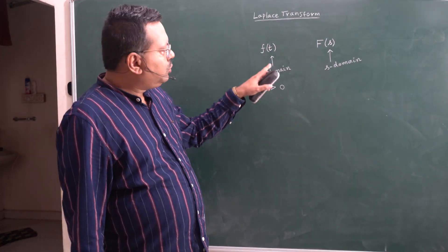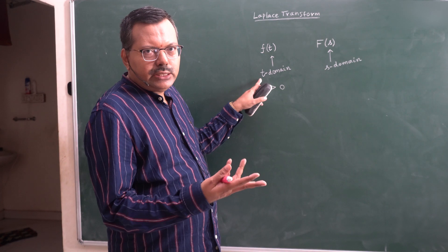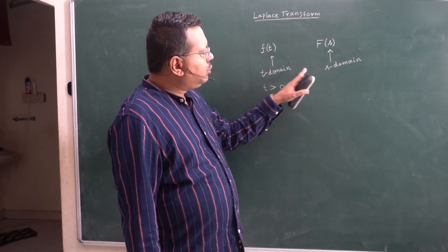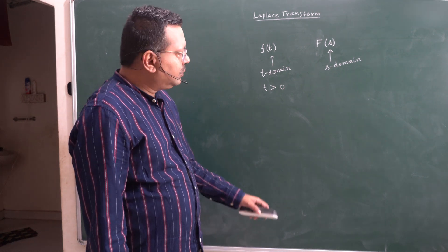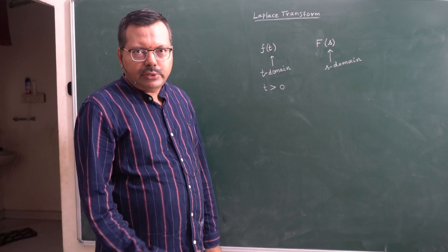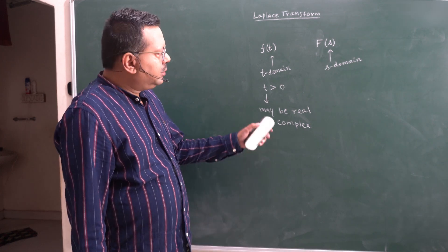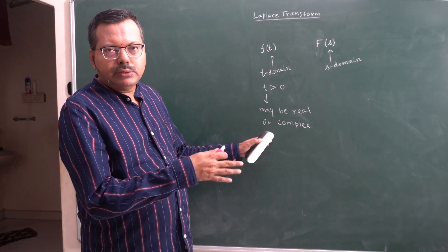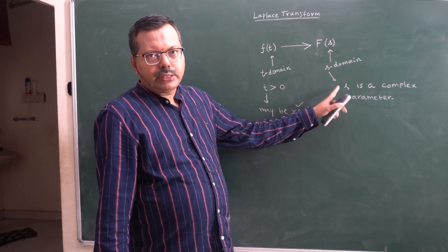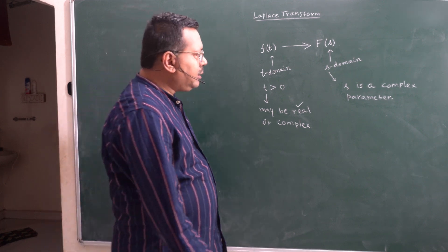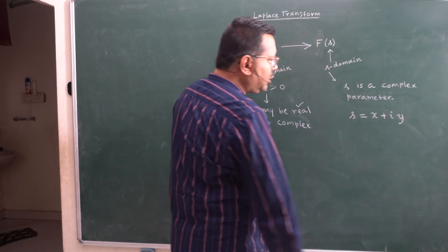The transformation we are talking about is moving away from the t-domain to work in a different independent variable. We don't want t as an independent variable — that's the objective. So we are going to move to another independent variable called s, giving us a function of s. Now, t can be a real variable or a complex variable. Even if you start with a real variable here, you will end up with a parameter s which is in general complex — meaning s will look like x plus iy.